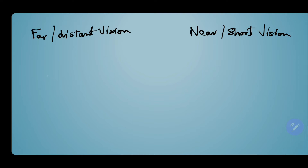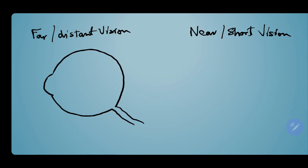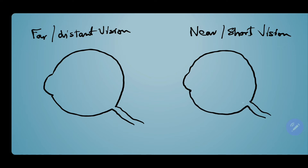Let's draw the eyeball with the cornea and optic nerve. For distant vision this is a relaxed eye, so the eye lens will be flattened — thinned out with less curvature. For near vision, because you're focusing on a closely placed object, the eye lens will be nearly spherical.